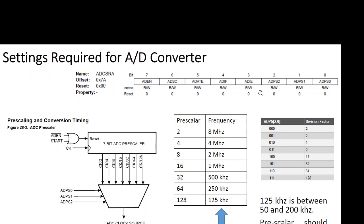To enable the ADC interrupt, I have to set the ADIE bit to 1. And to start the conversion at the beginning, I have to set the ADSC bit to 1.